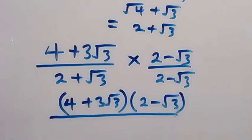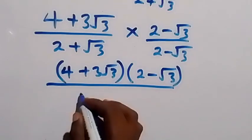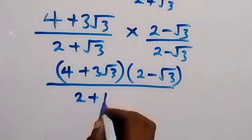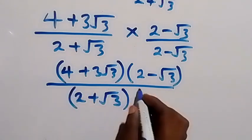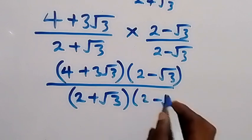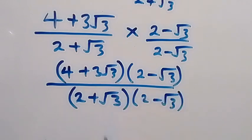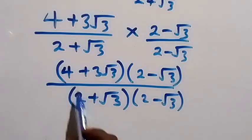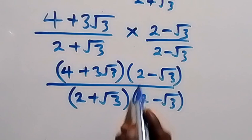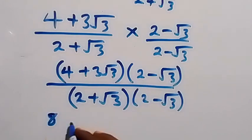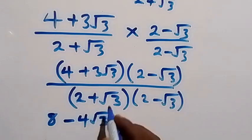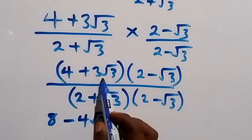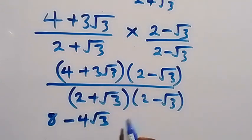We bring everything into brackets. The numerator becomes (4 plus 3 root 3) times (2 minus root 3). Expanding: 4 times 2 gives 8, then 4 times minus root 3 gives minus 4 root 3. Then 3 root 3 times 2 gives plus 6 root 3.